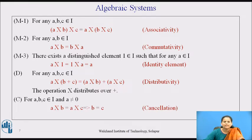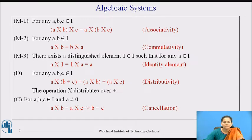Property D: for any a, b, c belonging to I, a × (b + c) = a × b + a × c, and we know this property is called distributivity — the operation of multiplication distributes over addition. Property C: for any a, b, c belonging to I with a ≠ 0, if a × b = a × c, then b = c, and we call this the cancellation property.